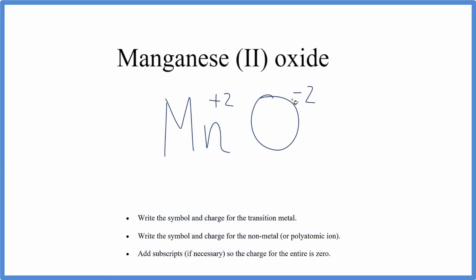So we have plus 2 and minus 2, those will cancel out, and leave us with MnO, and that's the formula for manganese (II) oxide.